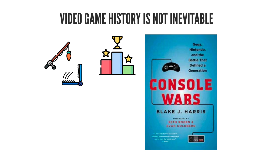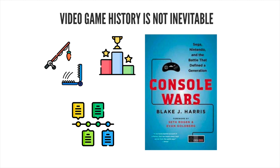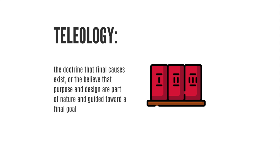Another issue to consider is the way that video game critics and journalists typically talk about video game history in terms of timelines. This is natural and hard to avoid, and we're going to do some of that in this subject. But it can lead to the trap of teleological assumptions about video games and the idea that the history that we have is the history that we were always going to have.